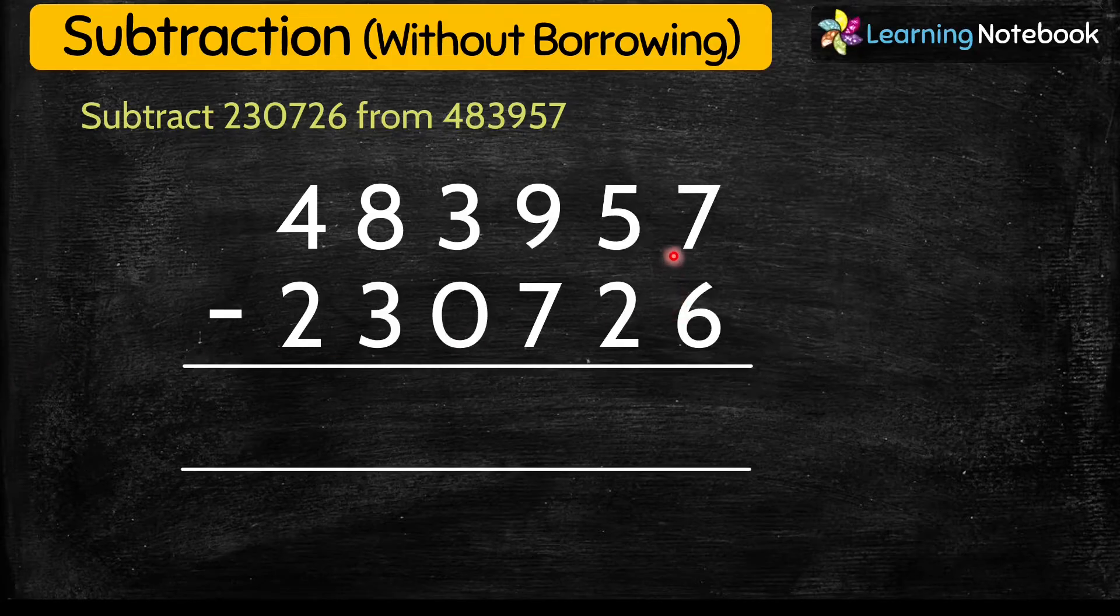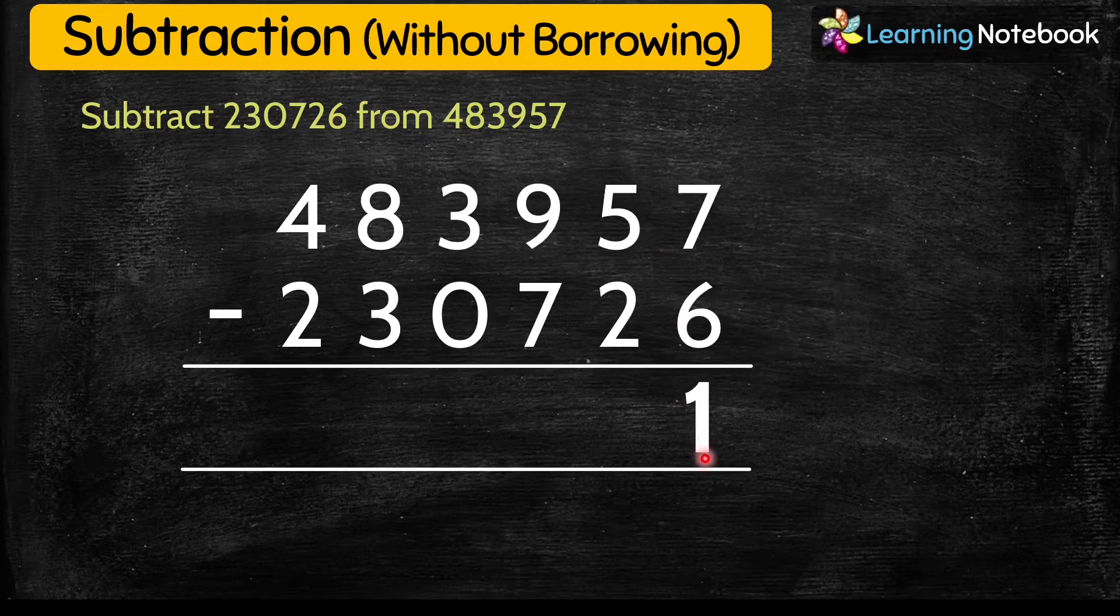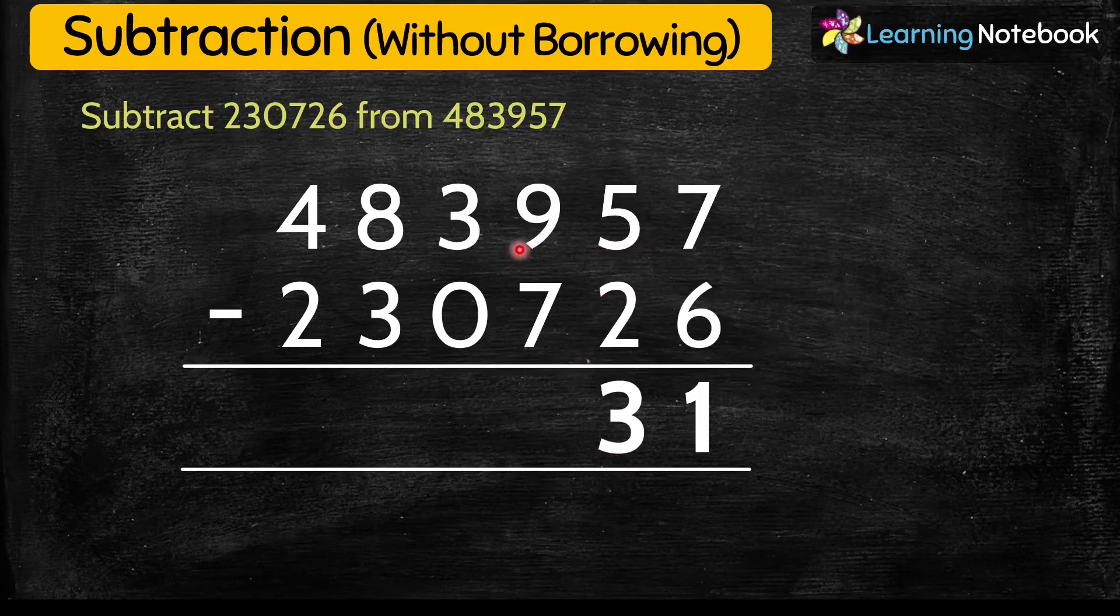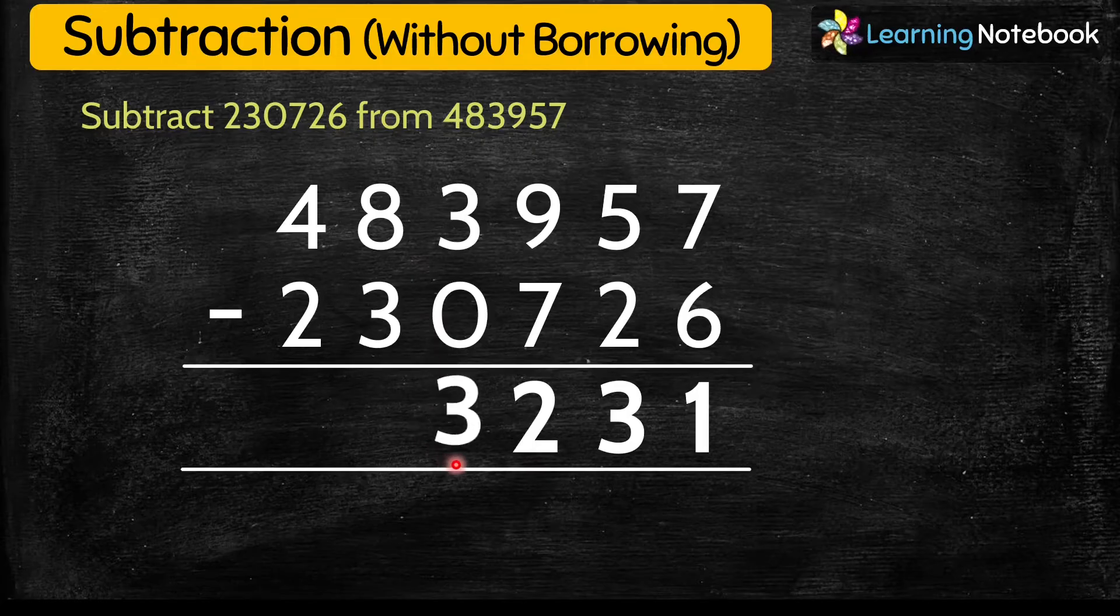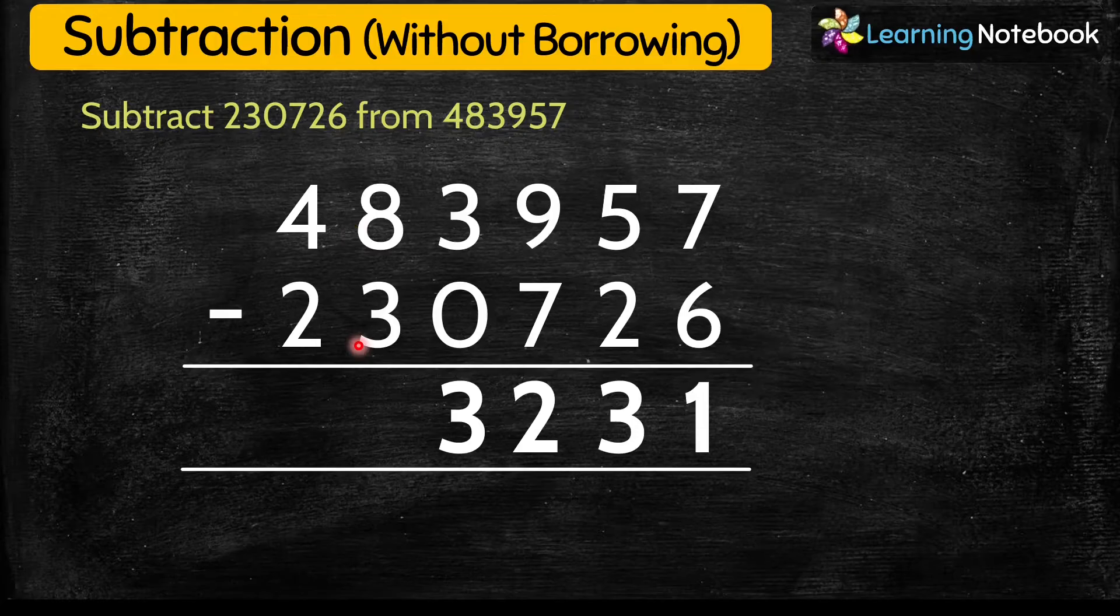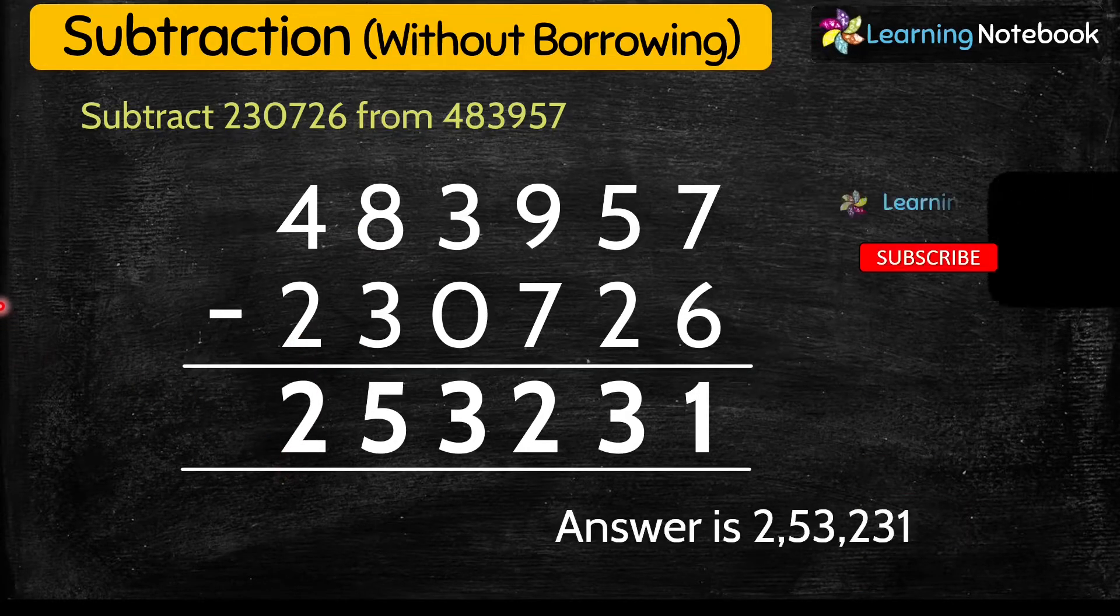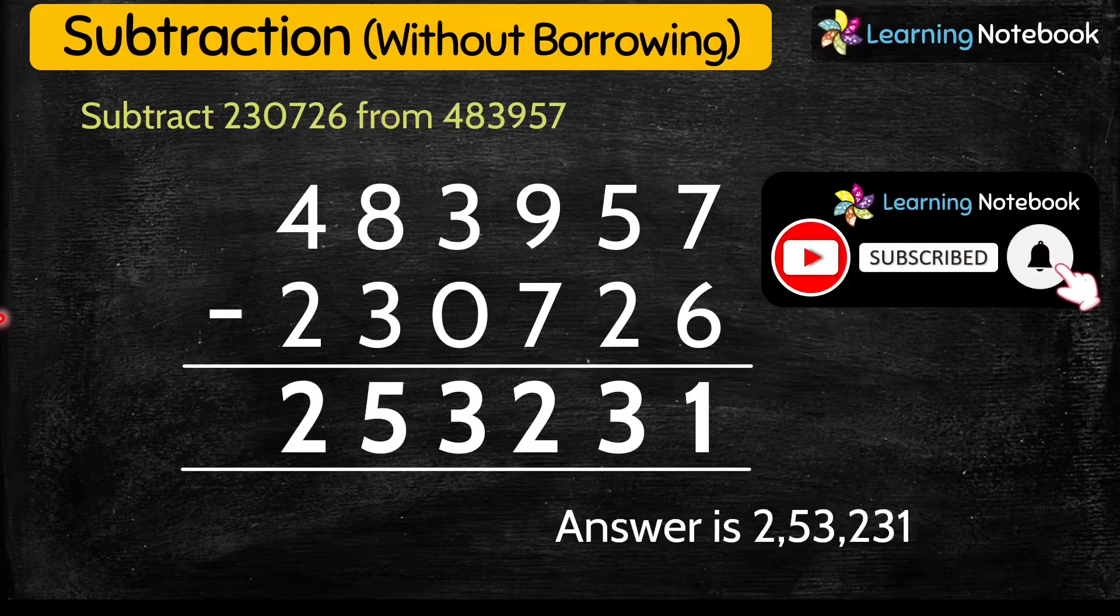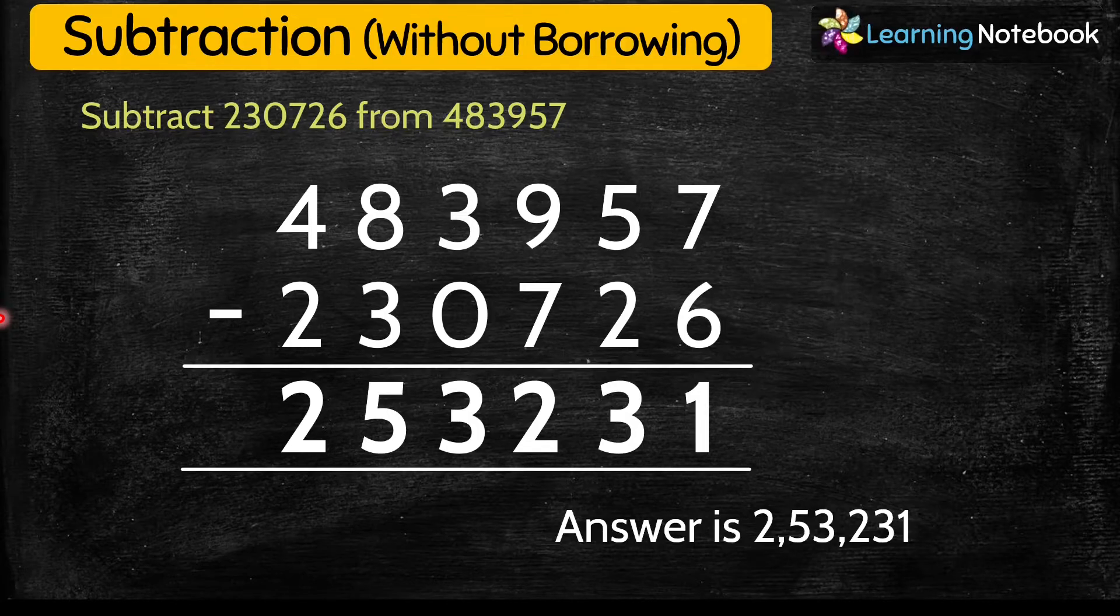7 minus 6 equals 1, 5 minus 2 equals 3, 9 minus 7 equals 2, 3 minus 0 equals 3, 8 minus 3 equals 5, and 4 minus 2 equals 2. So answer is 253,231. So students, this is how we subtract six-digit numbers without borrowing.